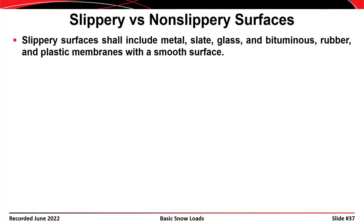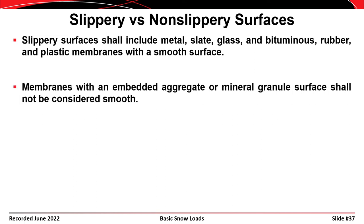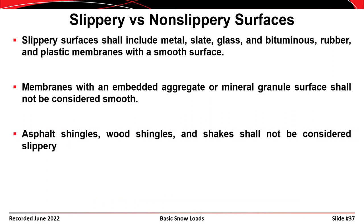A slippery roof is one with low friction, like sheet metal, where snow can slide off more easily. ASCE 7 states that slippery surfaces include metal, slate, glass, and bituminous, rubber, and plastic membranes with a smooth surface. Membranes with an embedded aggregate or mineral granule surface are not considered smooth. Asphalt shingles, wood shingles, and shakes are not considered slippery. Common sense applies: anything smooth with low friction is a slippery roof; anything with friction is not.